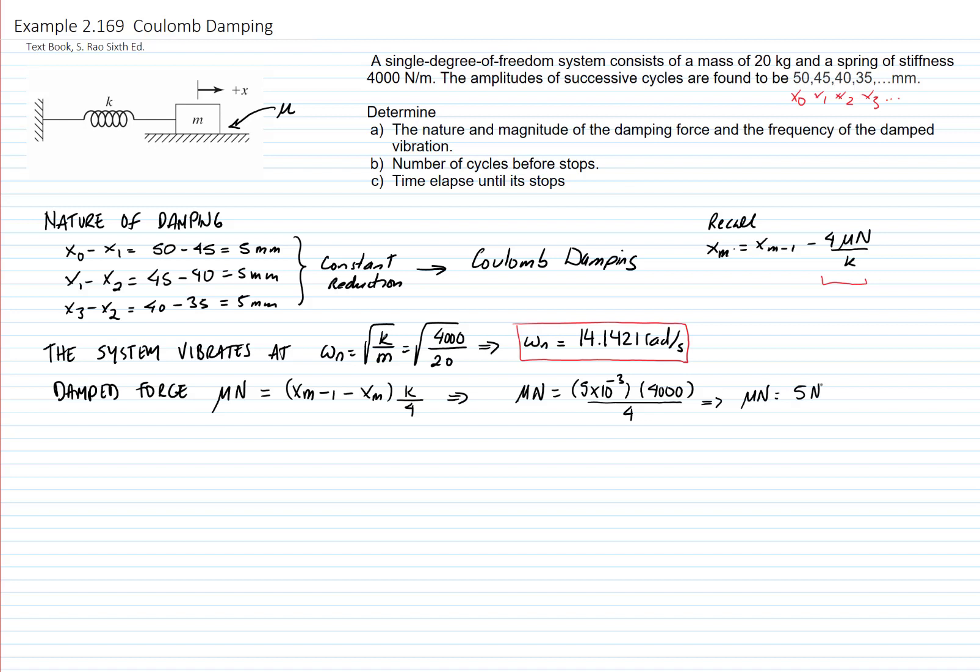With this equation, we can also find the friction coefficient because we know that the normal force is equal to the weight. The weight is the mass times the gravity. And then we calculate the friction coefficient, which is equal to 0.0255.